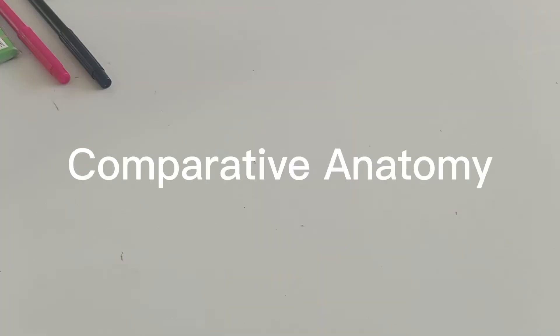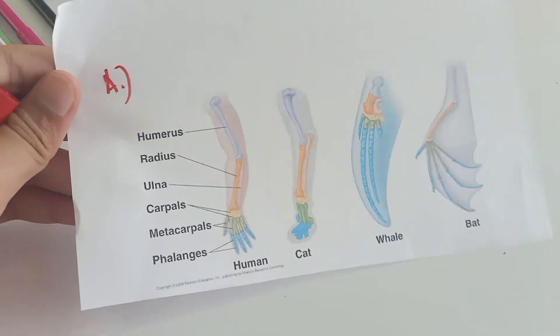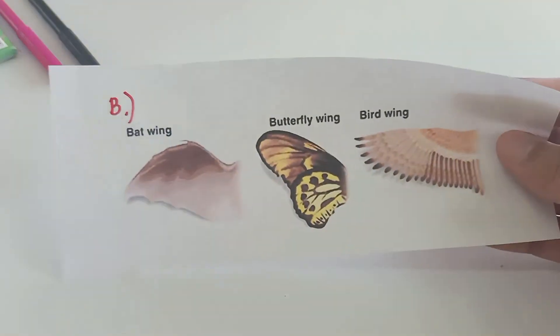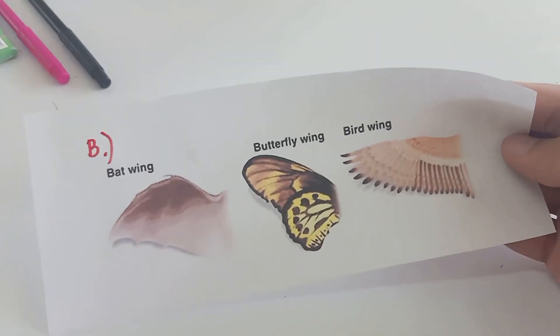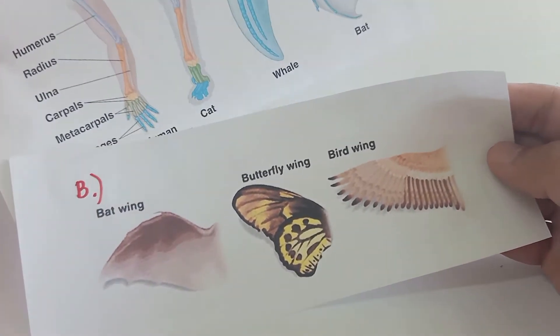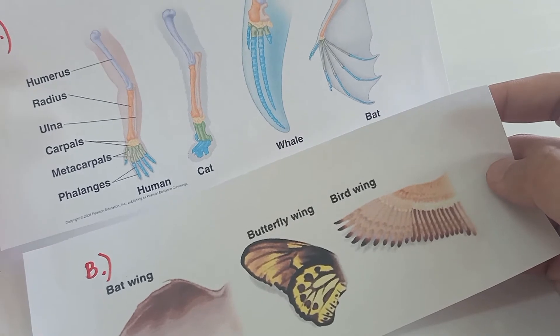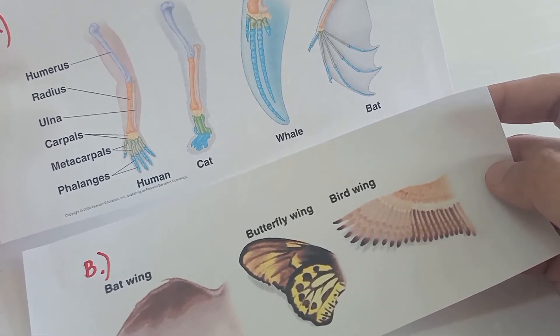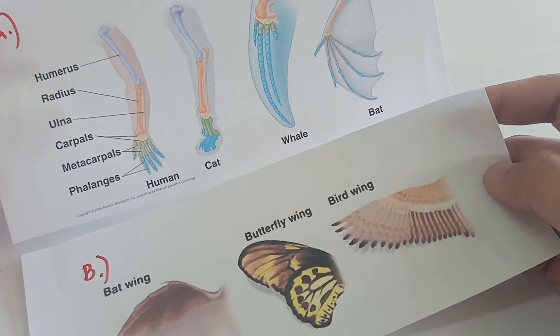Hi, our topic for today is all about comparative anatomy. But before we proceed, I would like to show you two strips of paper with pictures on it. The first one is labeled A — kindly look at it. And the other one is labeled B. The question is: which of these are homologous structures, and which of these are analogous structures?